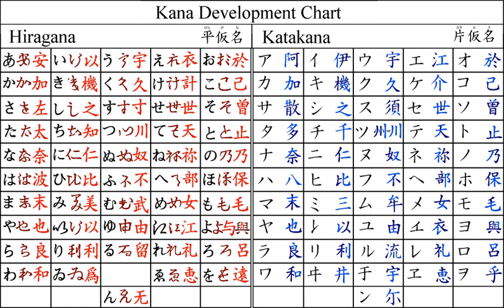Hentaigana are historical variants of modern standard hiragana. In modern Japanese, hiragana and katakana have directly corresponding character sets. Katakana, with a few additions, is also used to write Ainu. Taiwanese kana was used in Taiwanese Hokkien as a gloss for Chinese characters during Taiwan under Japanese rule.